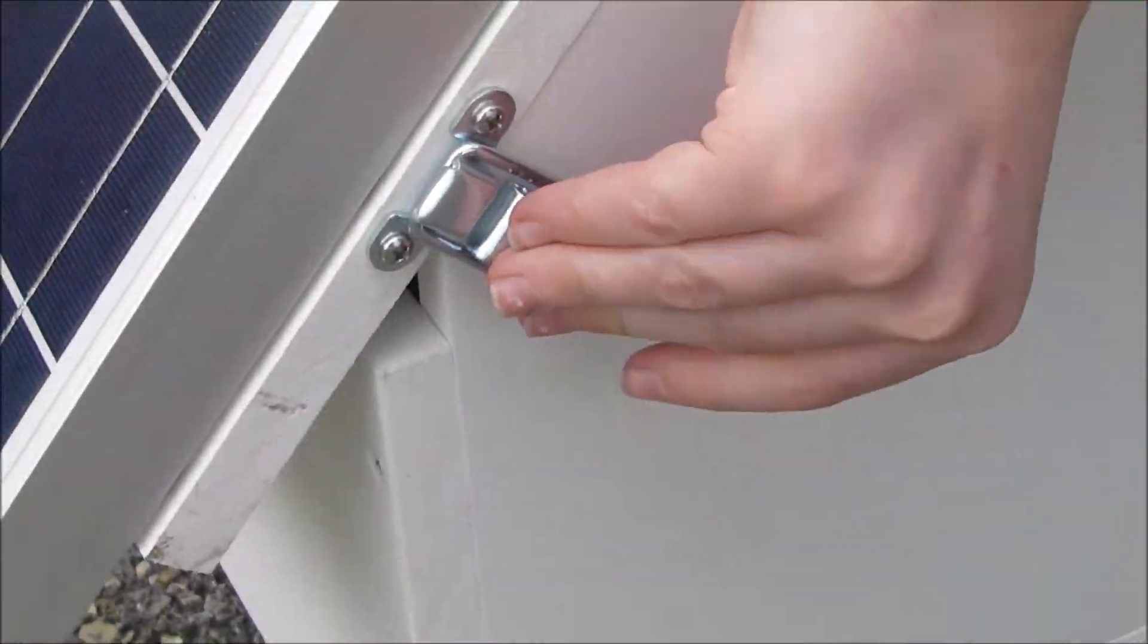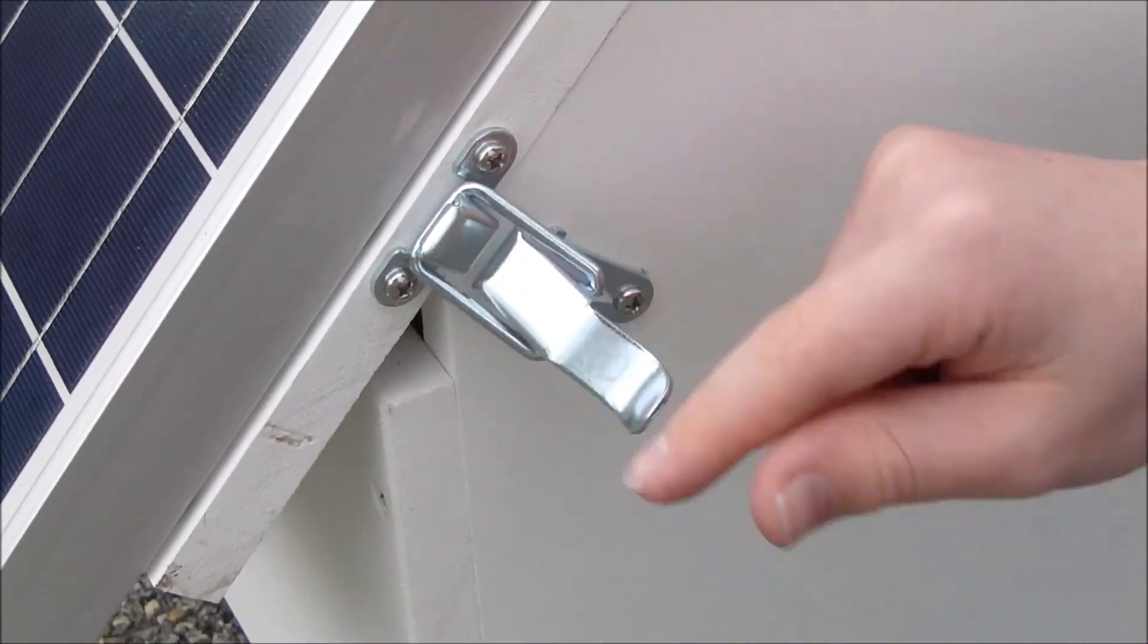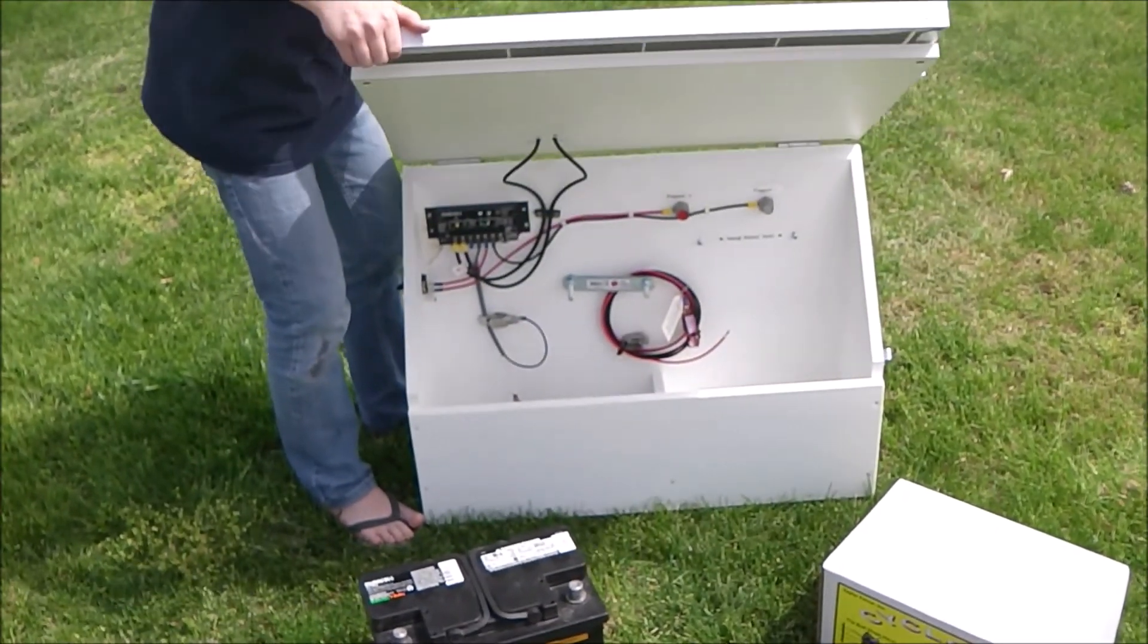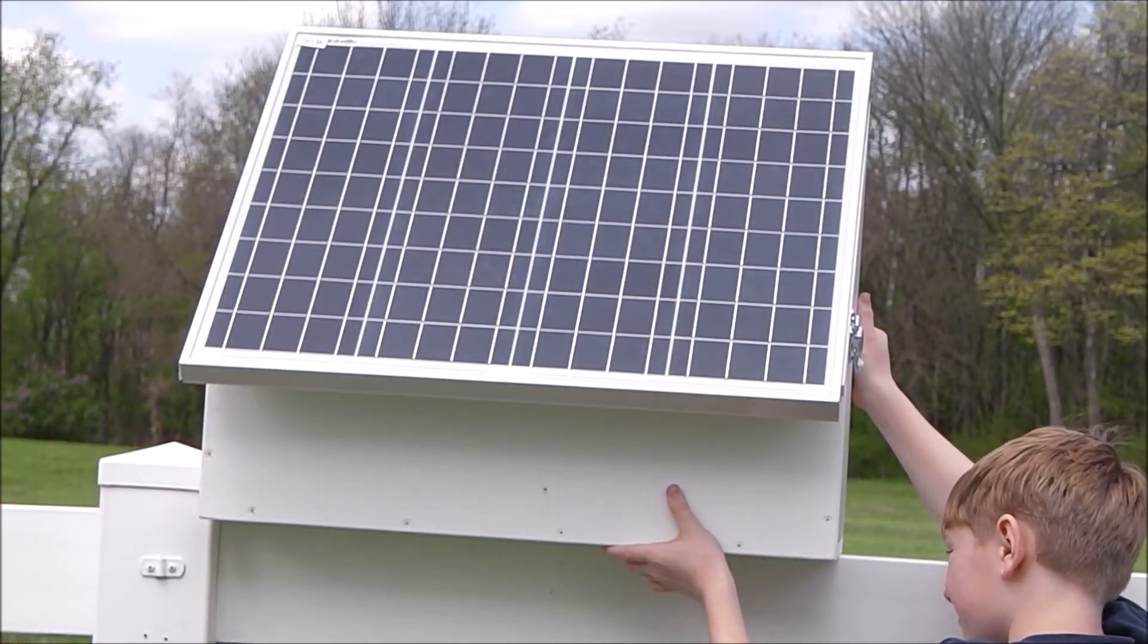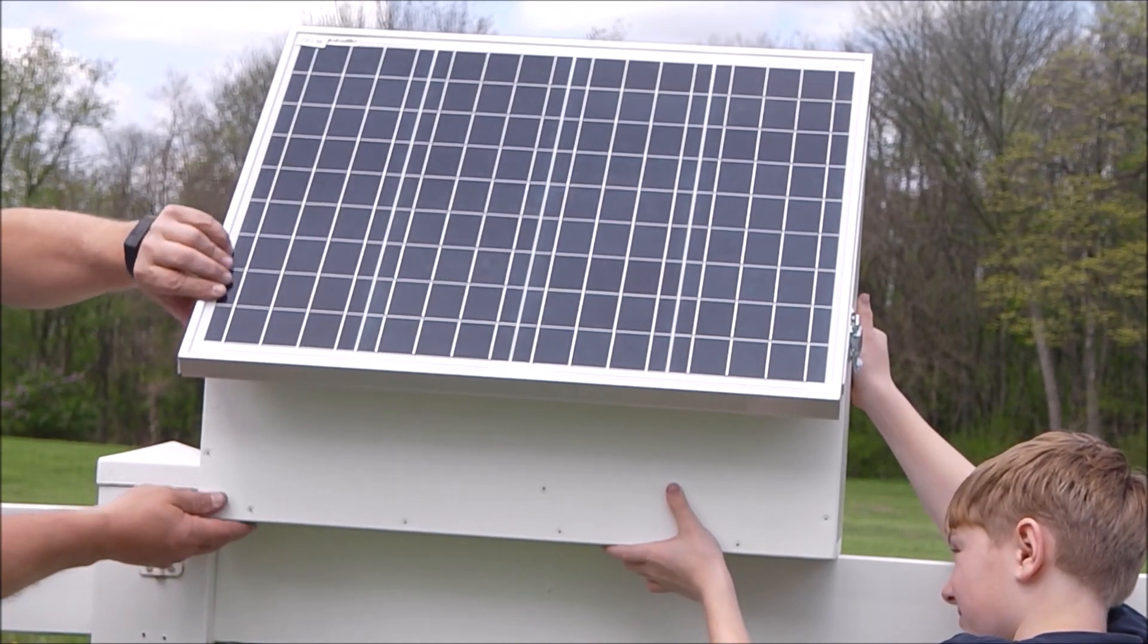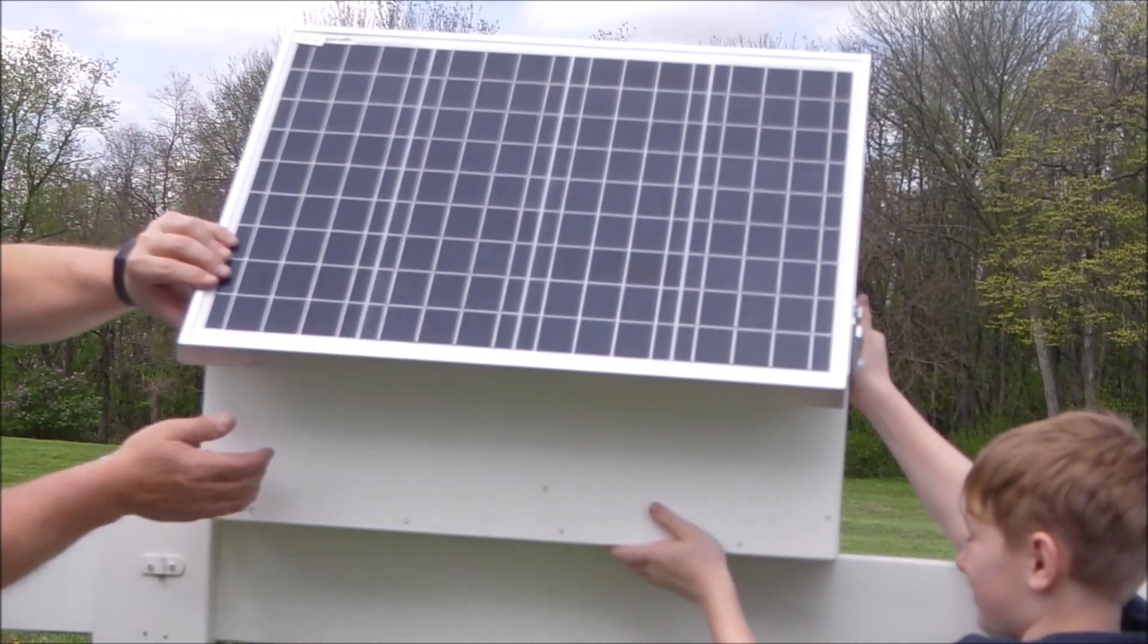It comes with everything already installed when you get the unit. You have to connect the lid to the box, but that's about it. You mount it to a fence post. In this video it's not mounted, it's just kind of sitting on top of a fence there.